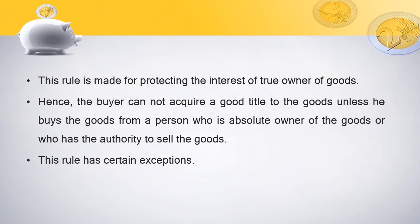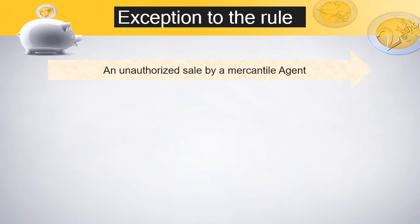This rule has certain exceptions. Exception 1: Unauthorized sale by a mercantile agent. If a mercantile agent is selling goods on behalf of their true owner, the agent does not have ownership of the goods. Still, as an agent, his duty is to sell the goods, so even though he is not the owner, he has the right to sell because he is an agent. Exception 2: Sale by one of the joint owners. It is also authorized if one of the joint owners has sold the goods.